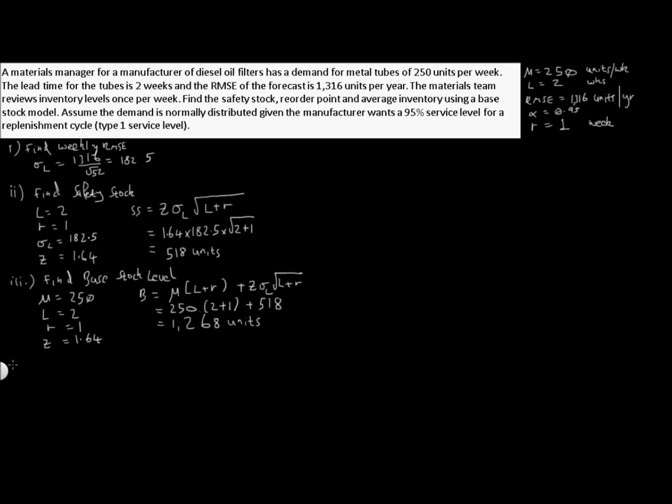Okay, so we can do our last step now for the base stock model. We're asked last of all to find what our average inventory is. So let's go ahead and find our average inventory. The terms we need for this are going to be mu again as 250, R is 1, and our safety stock calculated just before as 518.